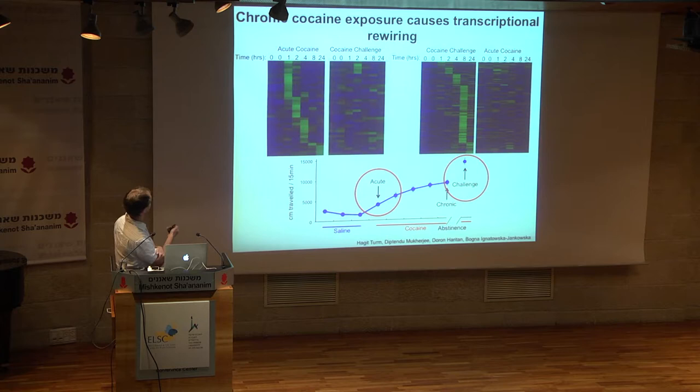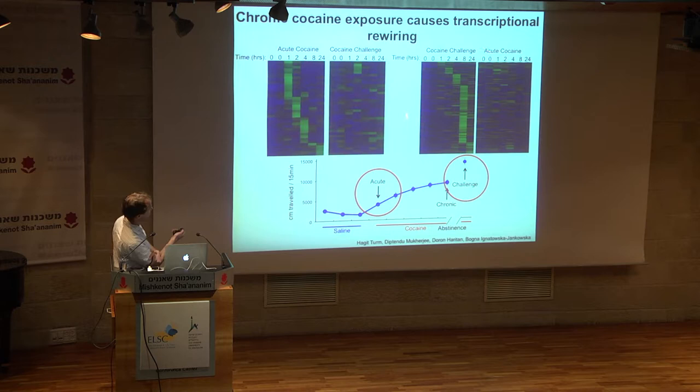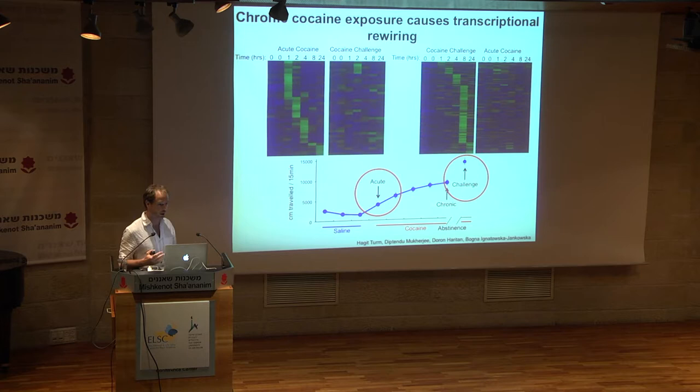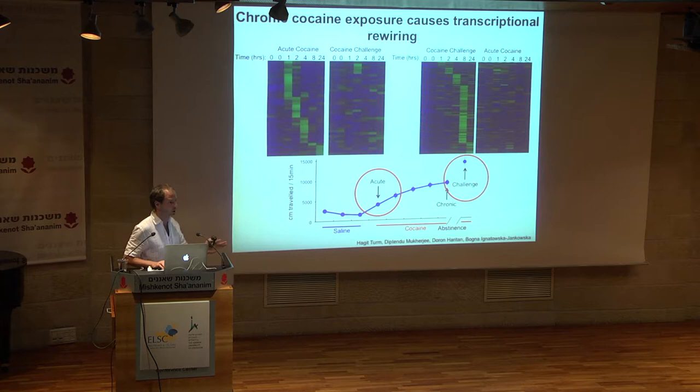When we compare the response in a mouse experiencing cocaine for the first time to one with prior cocaine experience, you can already see that the structure of the transcriptional program is shifted between these two conditions. When we look at the identity of the genes, those induced following acute cocaine are not shared with the challenge condition. There's a very dramatic rewiring of the transcriptional program that occurs following the experience of cocaine.